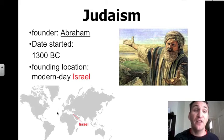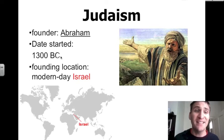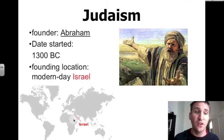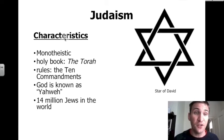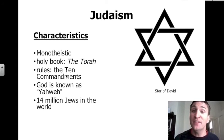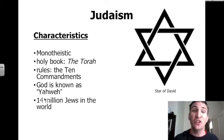Moving on to Judaism. The founder of this religion is Abraham. Judaism started in 1300 BC, before the birth of Christ, and the founding location is in modern-day Israel, in the Middle East, north of Africa, northeast of Saudi Arabia. Judaism is monotheistic. Its holy book is called the Torah. The rules of Judaism are found in the Ten Commandments, just like in Christianity. Jews call their God Yahweh, and there are 14 million Jews in the world.